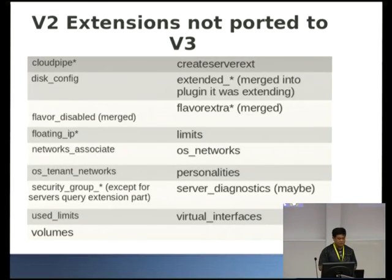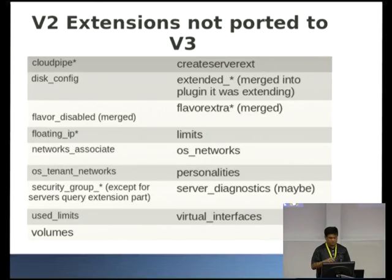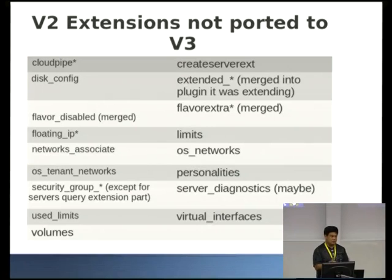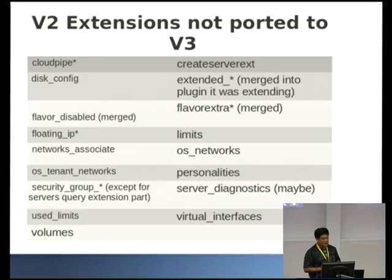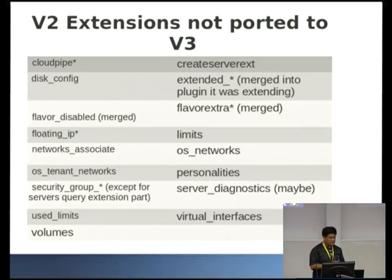There's a bunch of stuff not being ported to V3. They fall into a couple of categories: some are networking-specific extensions because when we're no longer proxying, we don't need those anymore. Others have been merged into other extensions — for example, the flavor type ones have been merged into the flavor extension, which was a result of having an explosion of extensions from having to write a new one every time. Others like personalities now have alternatives with cloud-init, and always had security issues. Some limit stuff has been rolled into quotas since we were reporting the same information through two different areas.